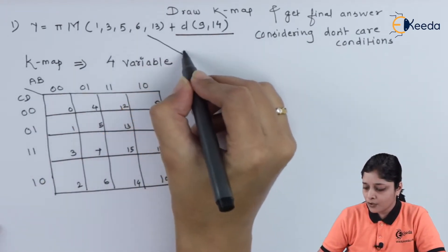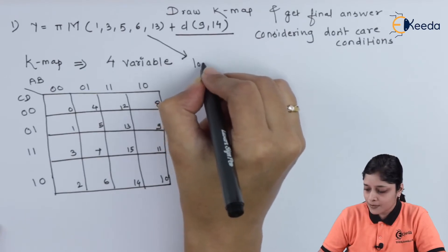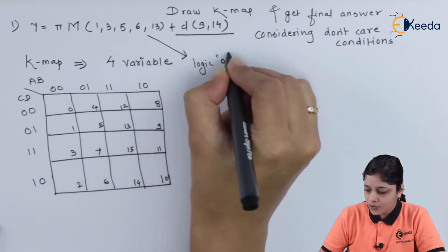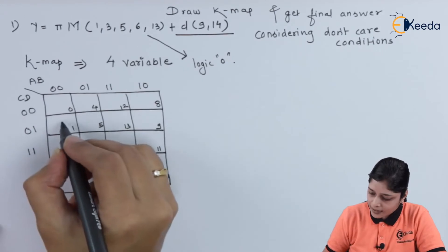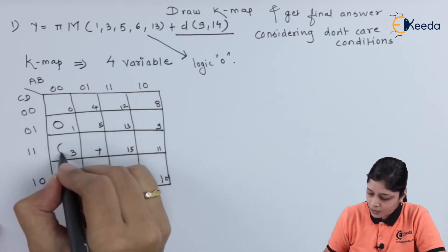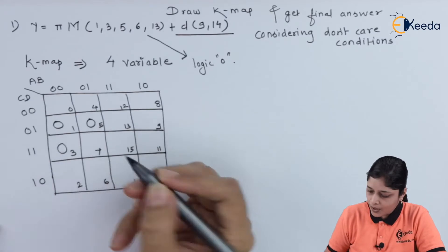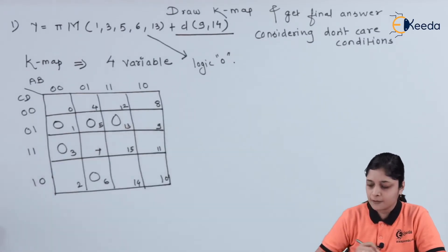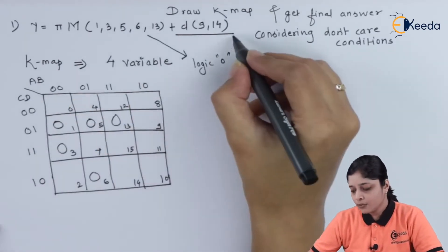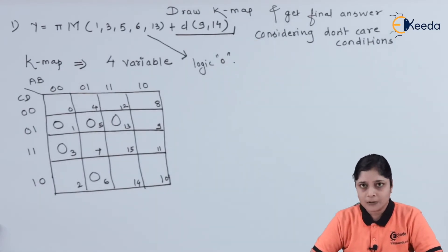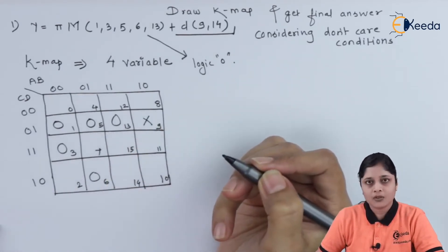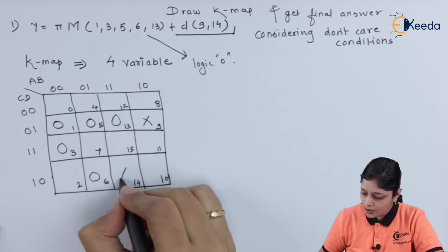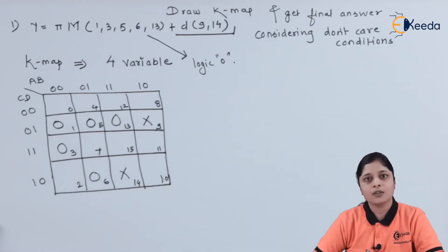First, concentrate on max terms and represent them by logic 0 inside the boxes. So we place logic 0 at positions 1, 3, 5, 6, and 13. Now the new part: the don't care conditions. Don't care is denoted by a cross sign, so position 9 gets a cross and position 14 gets a cross.